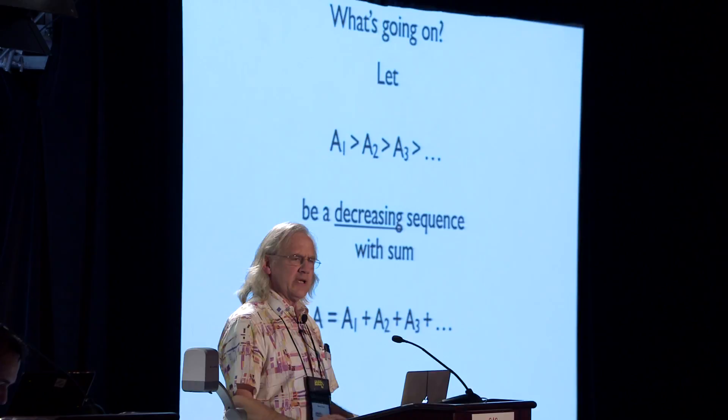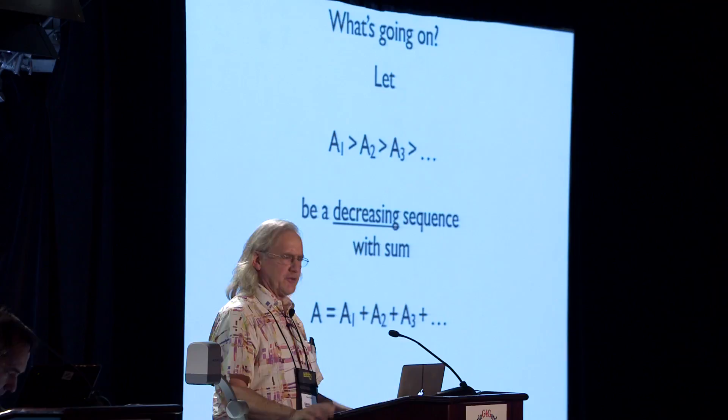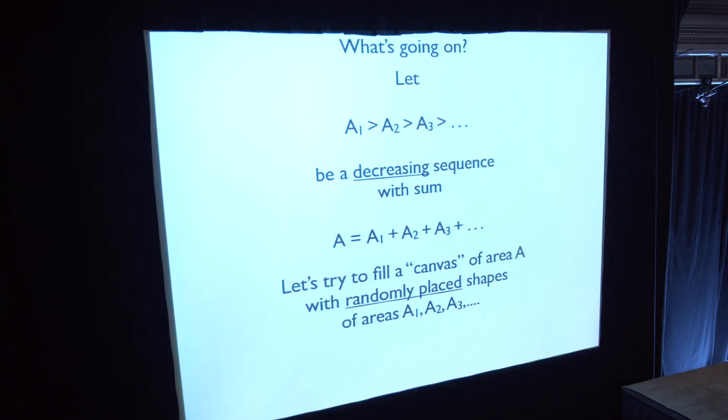What's going on here? What's going on is we're taking a decreasing sequence of areas that have a finite sum. And we're going to try to fill a canvas of area A with randomly placed shapes of these decreasing areas.